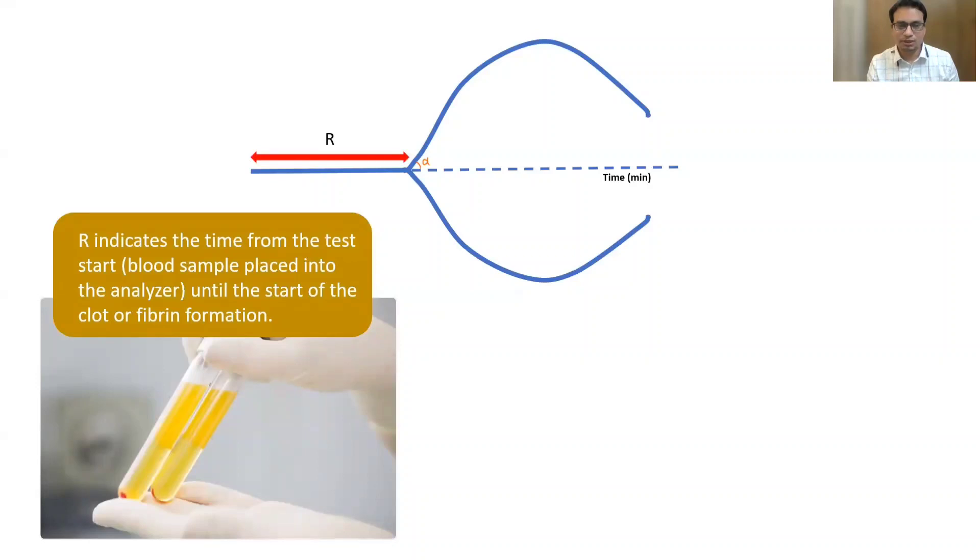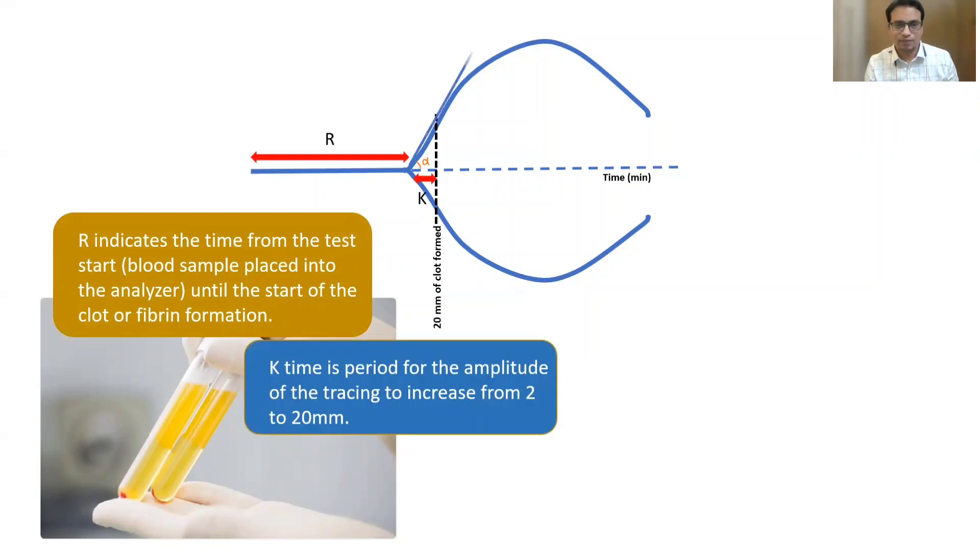Now the K time comes. K time is the period for amplitude of the tracing to increase from two millimeter to 20 millimeter. That is very important, that is called K time.